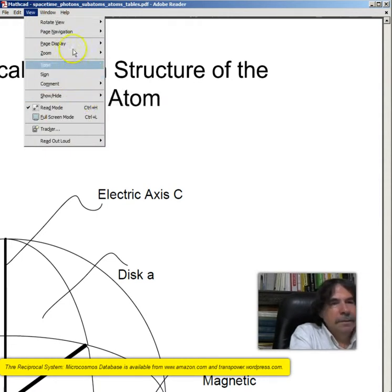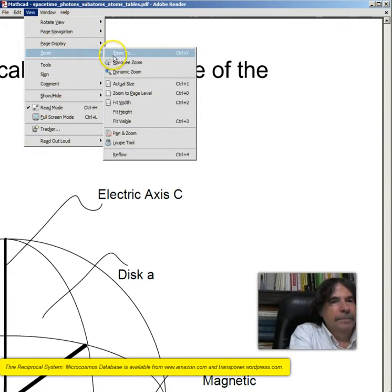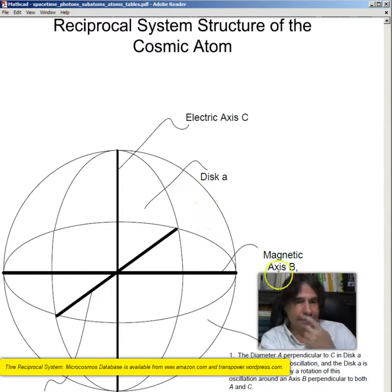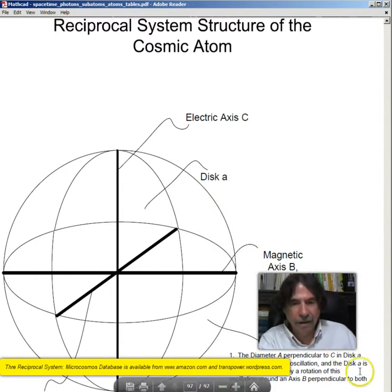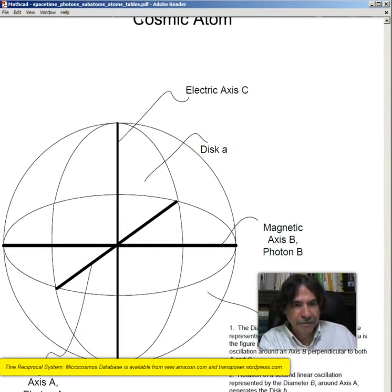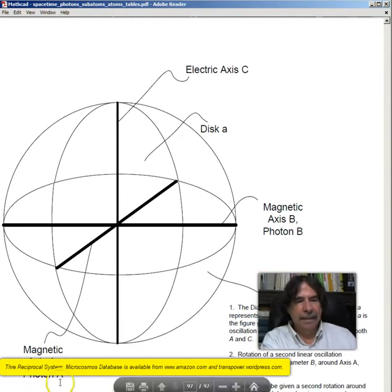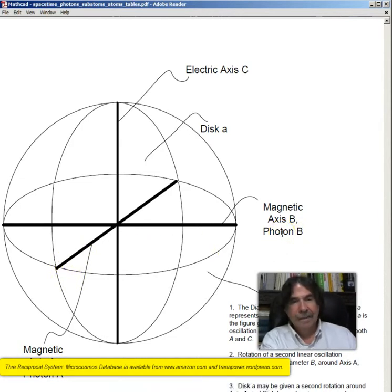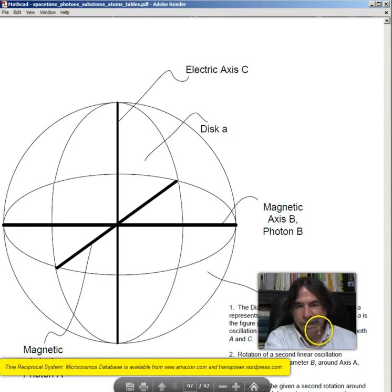And that's in here. The reciprocal system structure of the cosmic atom. So let's review this again. We have magnetic axis A, which is photon A. We have magnetic axis B, photon B. And then we have electric axis, which is vertical. This is disk A, and this is disk B. Number one, diameter A perpendicular C in disk A represents one linear oscillation of the photon. And the disk A is the figure generated by rotation of this oscillation around the axis B, perpendicular to both A and C.